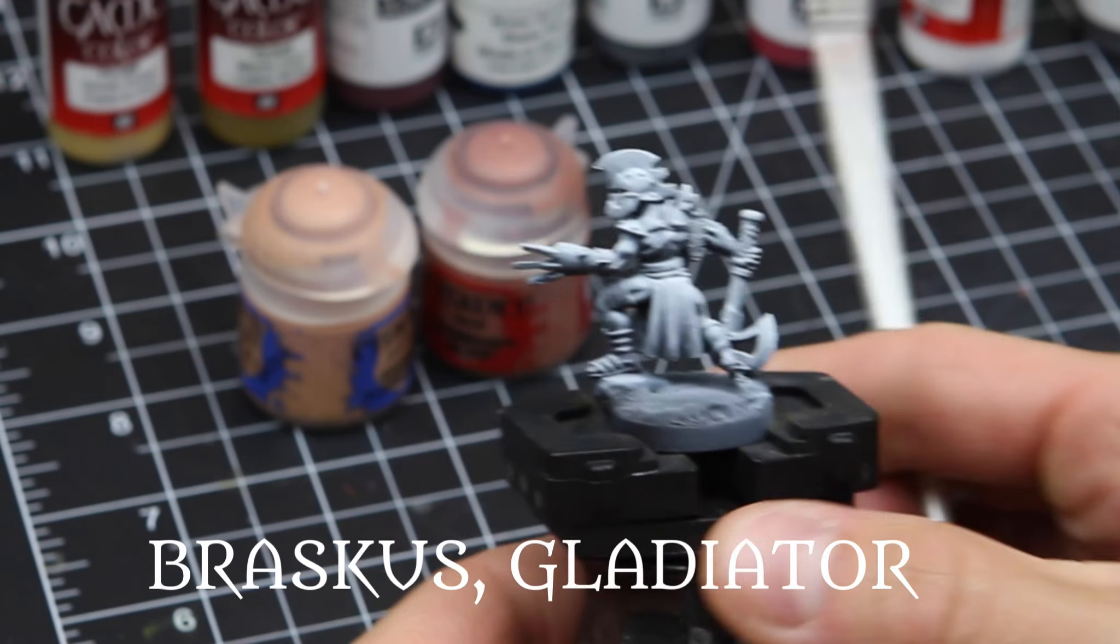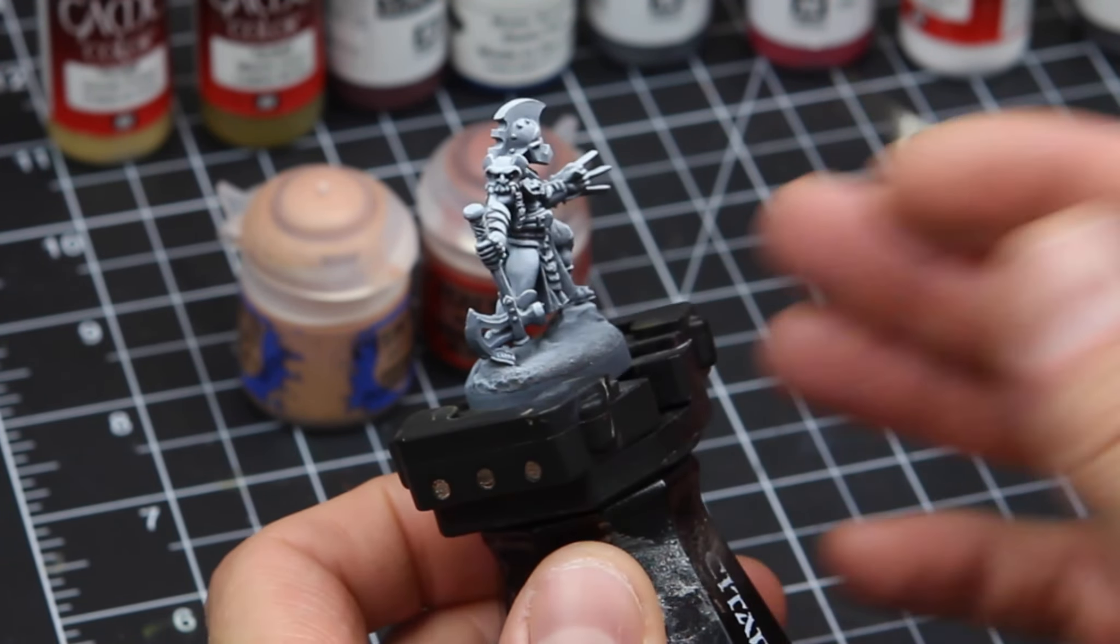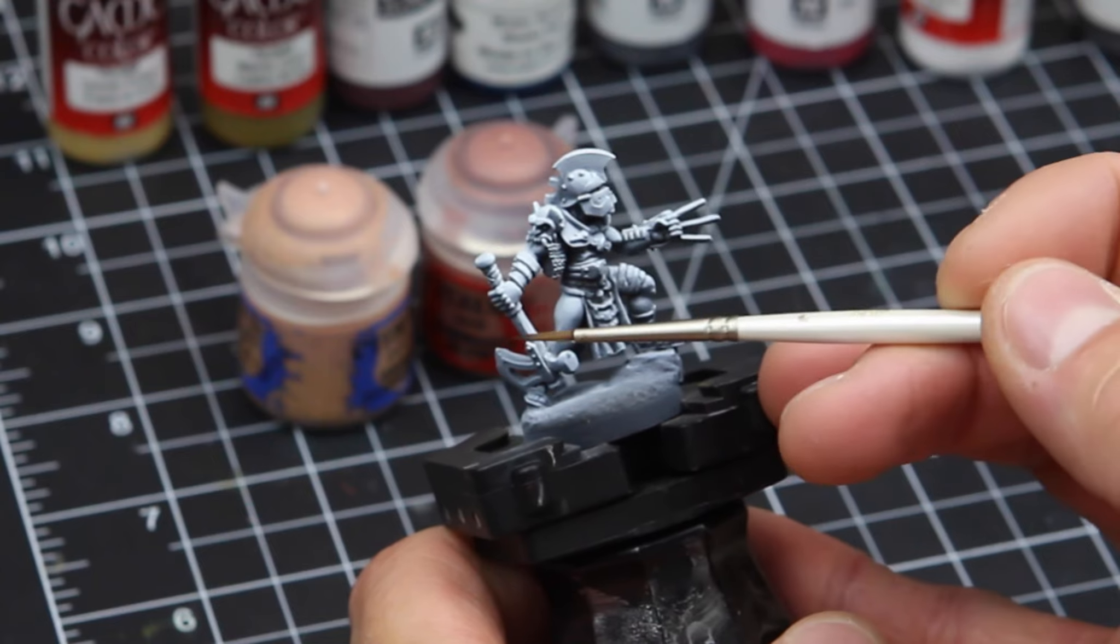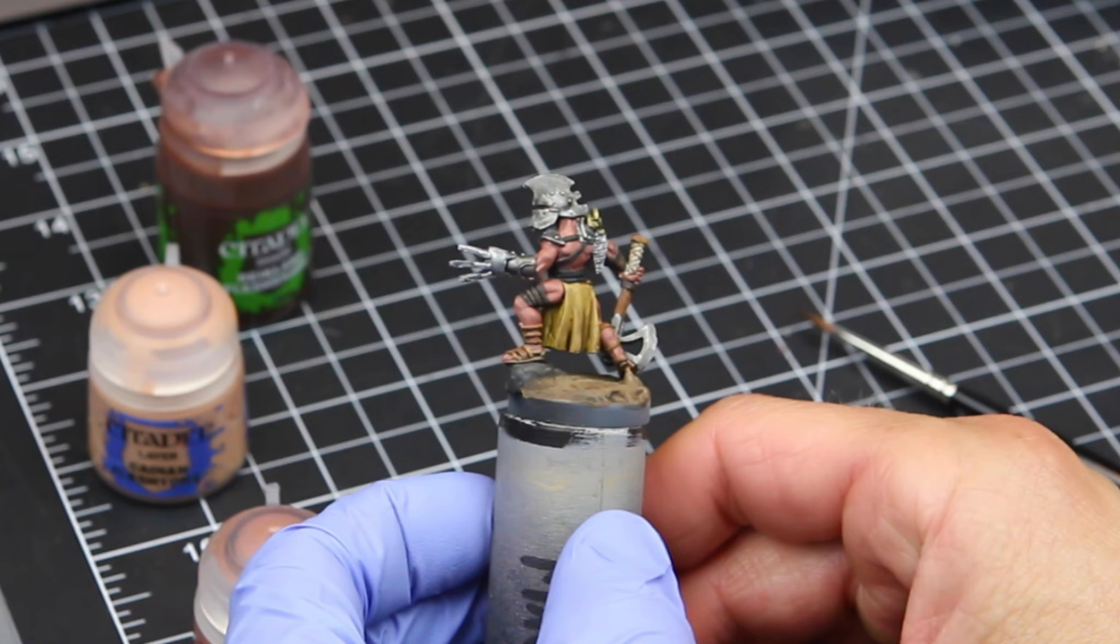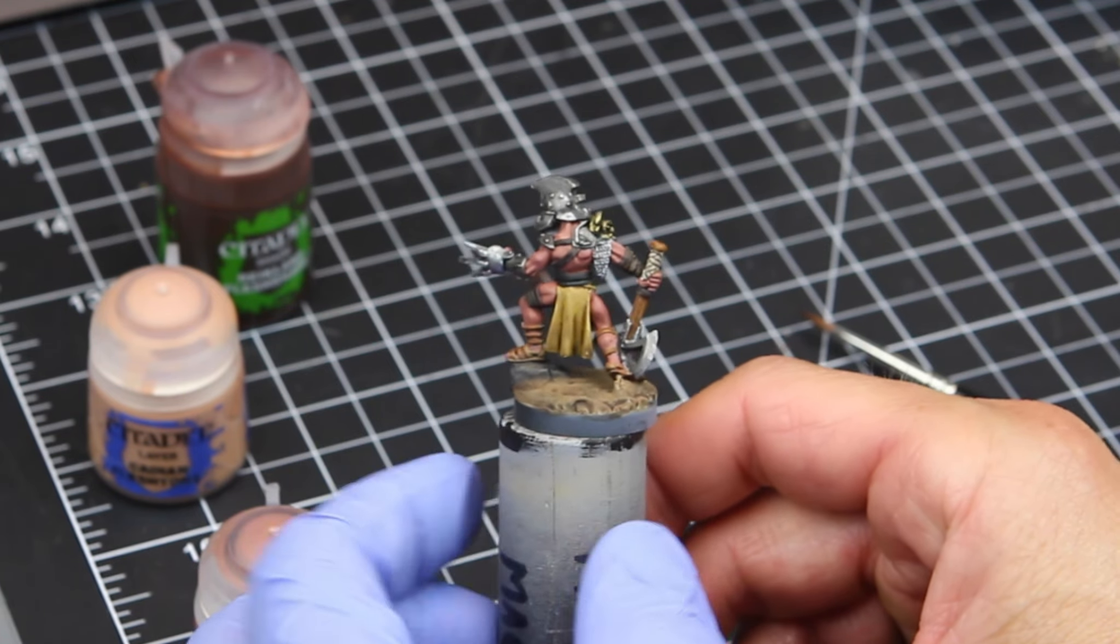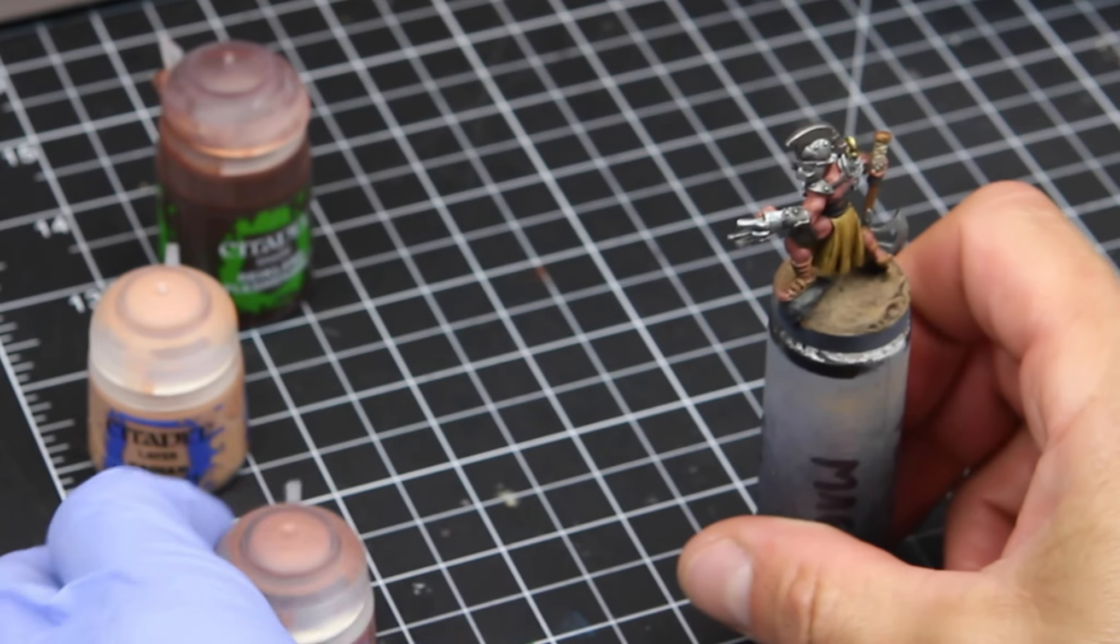All right, this is going to be really fun. This is my favorite technique for doing a skin tone. It's going to be a combination of the glaze that we did earlier, and a couple different coats of paint, and a wash. So his skin already, I painted in Bugman's Glow.